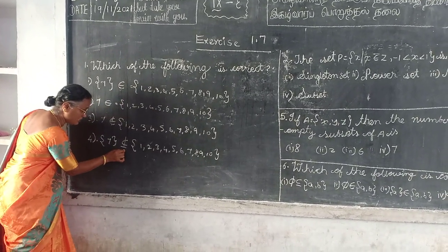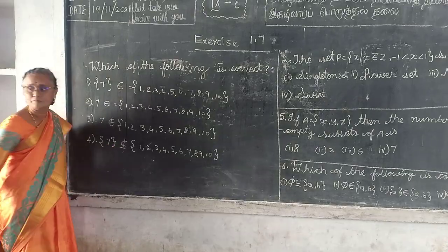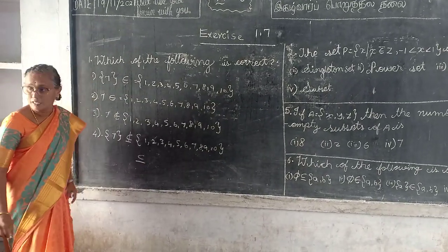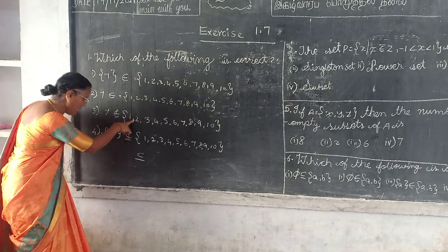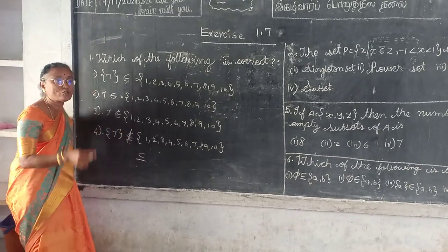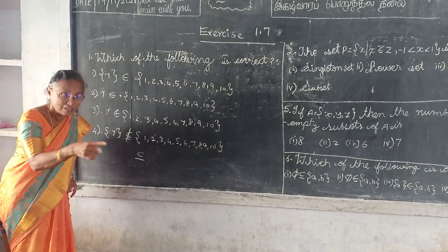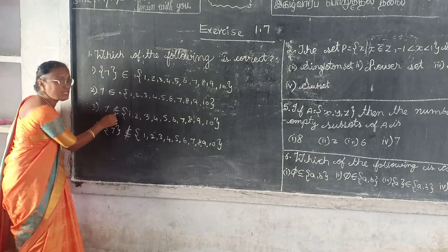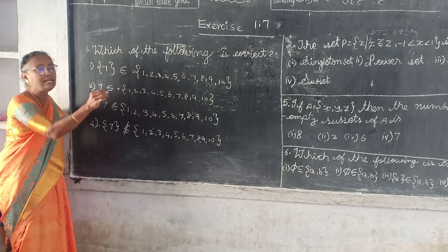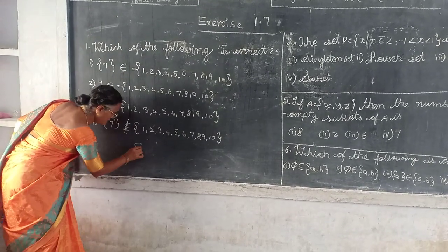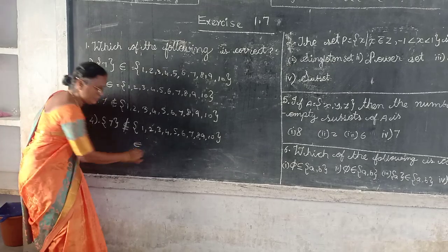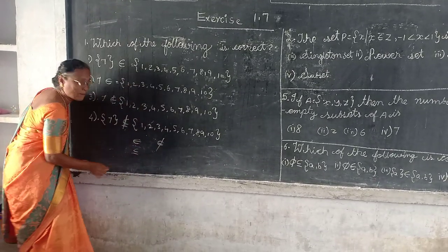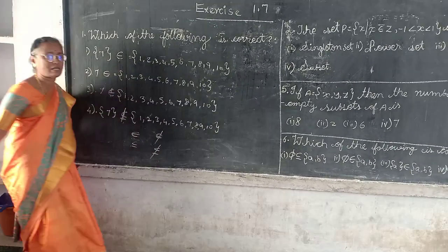What is the name of this symbol? Subset. Very good. Subset. Here they have given this line also — that means not a subset. This is element, this is not an element. This is a subset, and this is a subset, and this is not a subset.